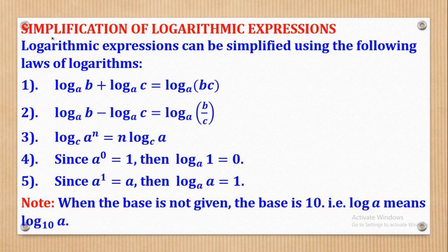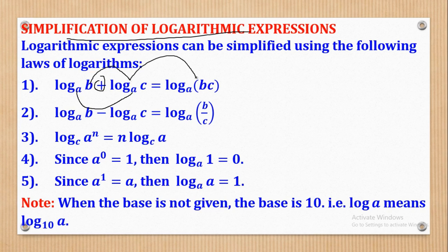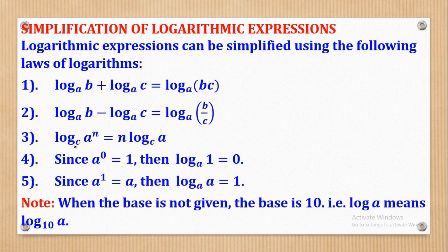There are some rules you need to know when simplifying logarithmic expressions. First, the addition rule: when the base is the same and you have addition, the arguments are multiplied. If the base is the same and you have subtraction, the arguments are divided. Also, log base c of a to power n — the power n can come down to become n times log base c of a.